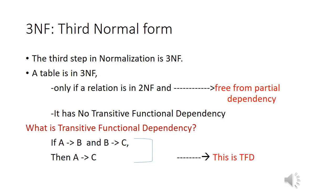3NF, that is Third Normal Form, is the third step in normalization. When we say a table is in 3NF, it must be in 2NF — which we have already seen. 2NF is free from partial dependency. Next, it has no transitive functional dependency. So remember, for a table to be in 3NF, it must be in 2NF and there must be no transitive functional dependency.